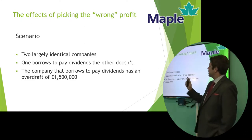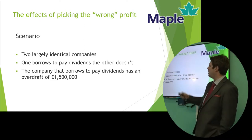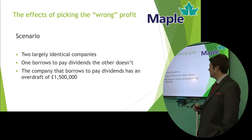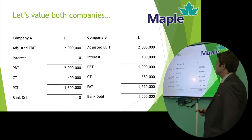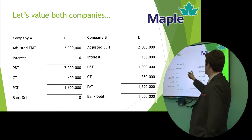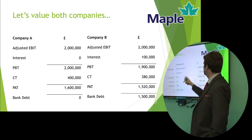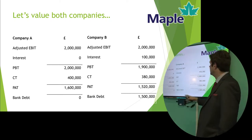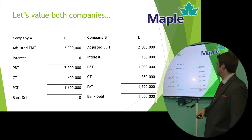Let's look at a quick scenario showing the effect of picking the wrong profit. So two largely identical companies — one borrows to pay dividends and the other funds internally. The company that borrows to pay dividends has an overdraft of £1.5 million. We've got the companies here side by side — Company A, Company B. We've adjusted the EBIT, and in principle it's the same for both. Company B, because it's got that big overdraft, is paying interest. So our profit before tax is slightly lower in Company B than Company A. Running through the corporation tax, the profit after tax is £1.6 million or £1.5 million.